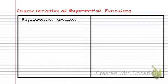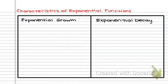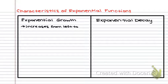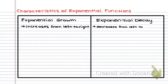The other one is called an exponential decay function. An exponential growth function grows — meaning it increases from left to right — and a decay function decreases from left to right. Some of you might be thinking that lines also do that. This is not a line.